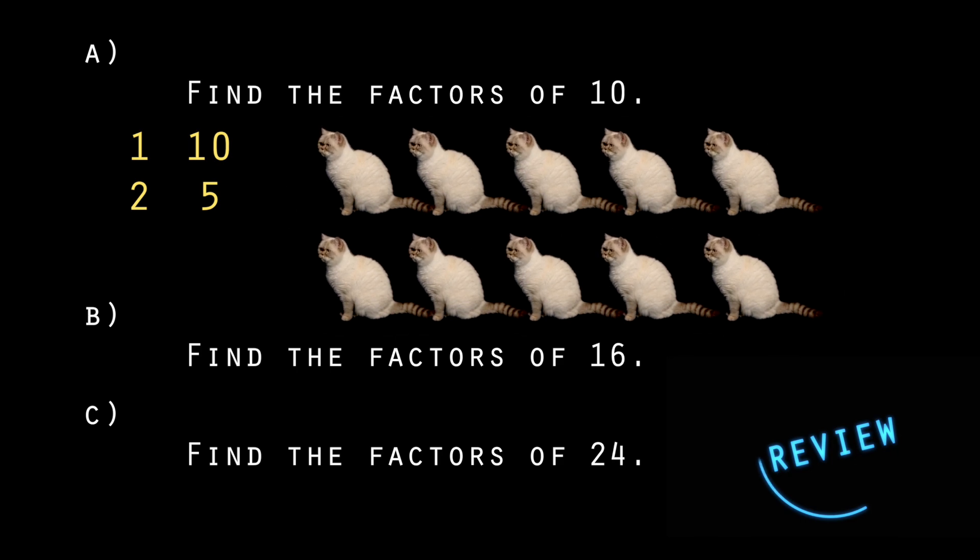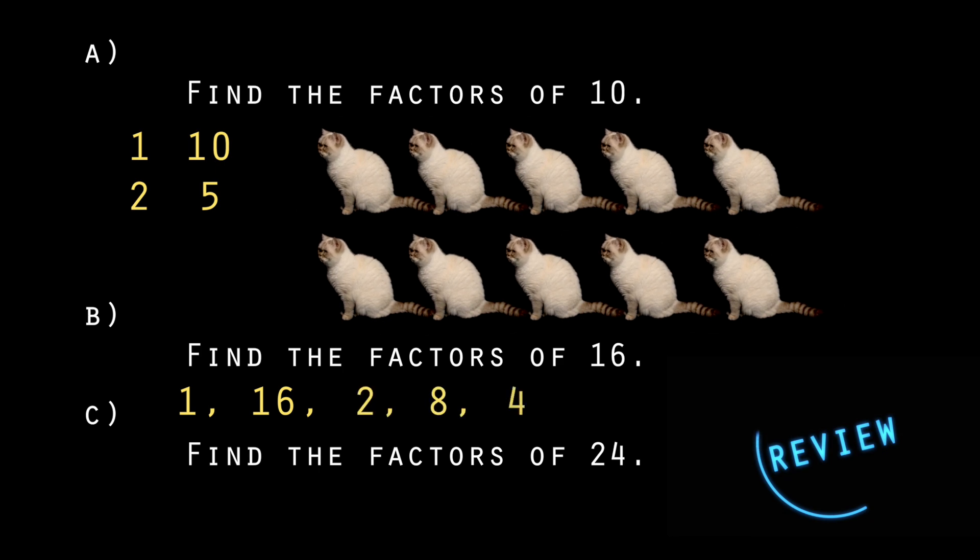For 16, my factors are 1 and 16, 2 and 8 and 4, which will times by itself to get 16. It's a square number.